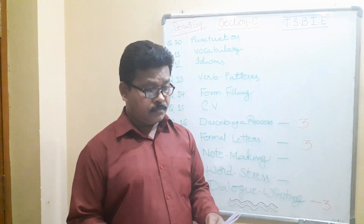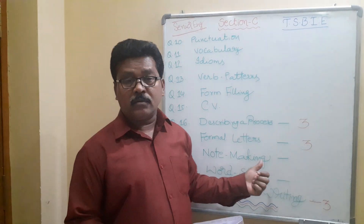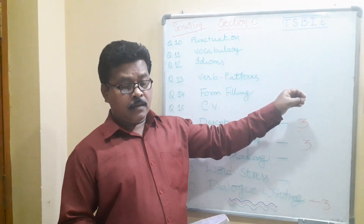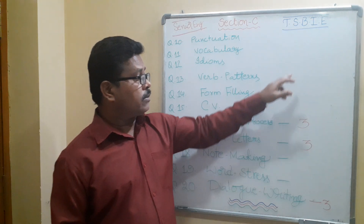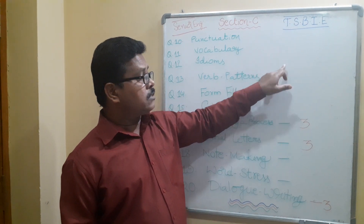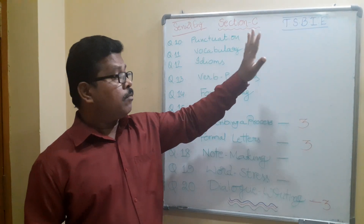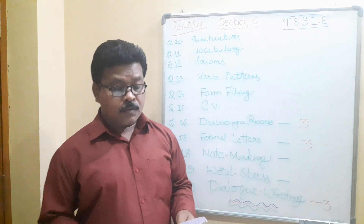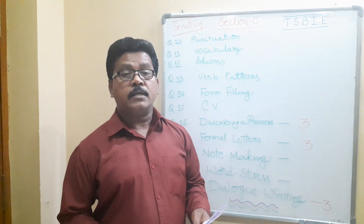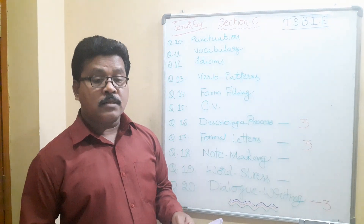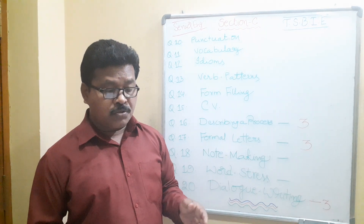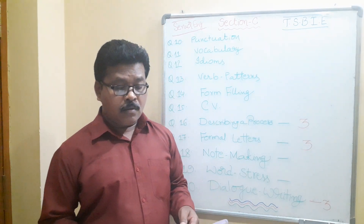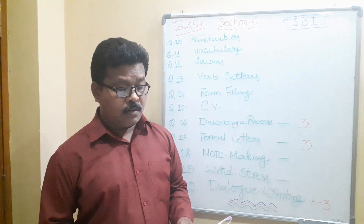Question number 18 is note making. A big passage is given and you have to select important points — minimum 5, maximum 7. Write an appropriate title and then present the points in point-wise format, not paragraph-wise. Use bullet points with short, brief content. Textbook pages 263 to 270 have exercises on topics like success tips, adolescence, computers, hobbies, GK, interview techniques, exam preparation, and mobile phone advantages and disadvantages — all very important.